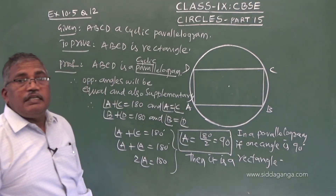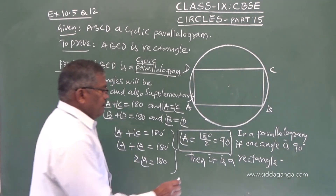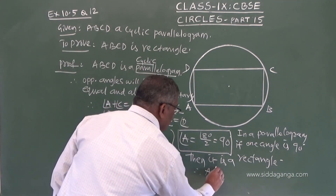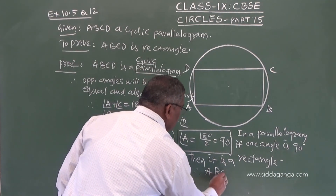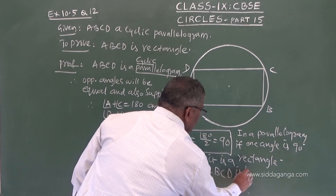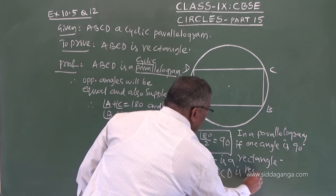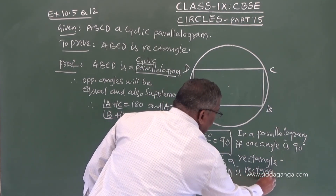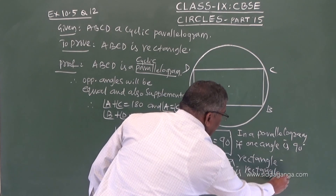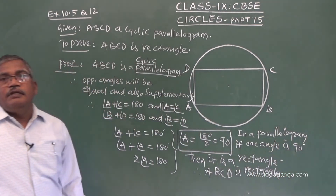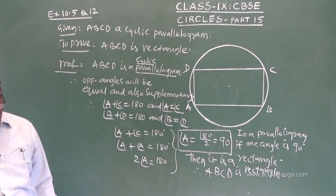Therefore, ABCD is a rectangle. Hence proved.